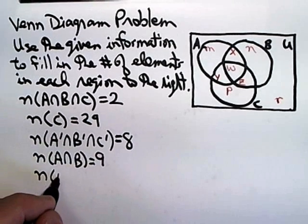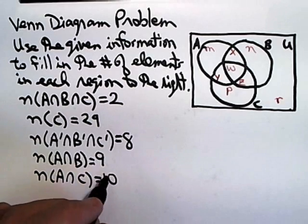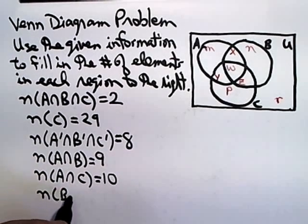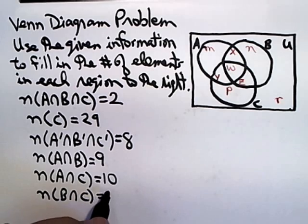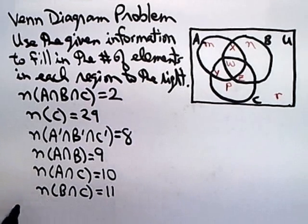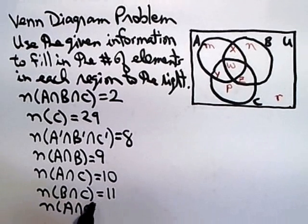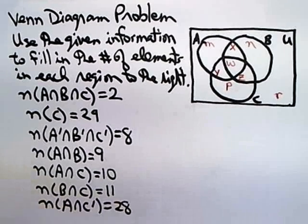We know that the number of elements in A intersect C is 10. We know the number of elements in B intersect C is 11. We know that the number of elements in A intersect C complement is 28.